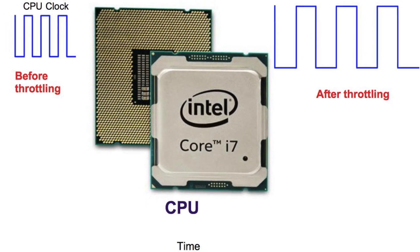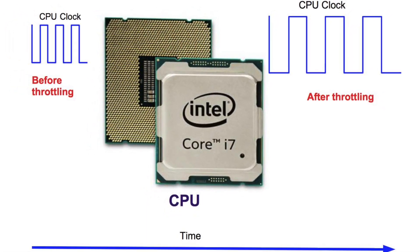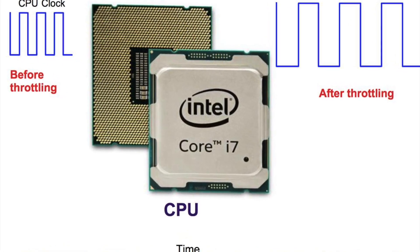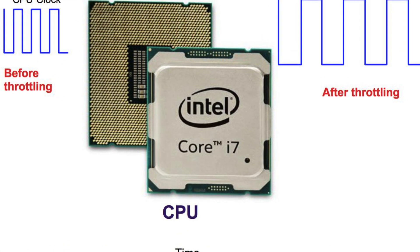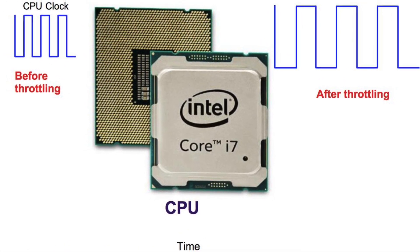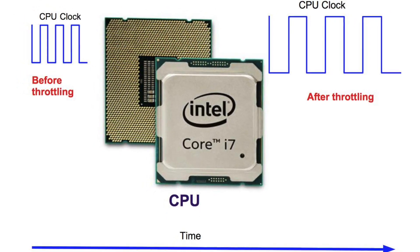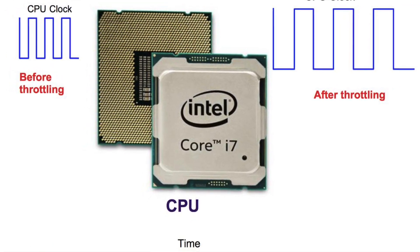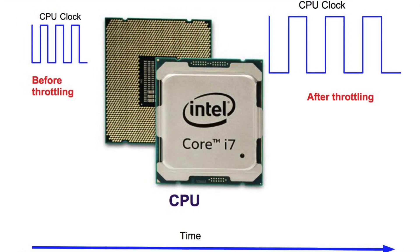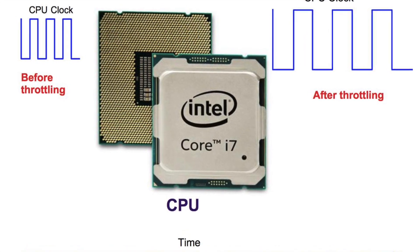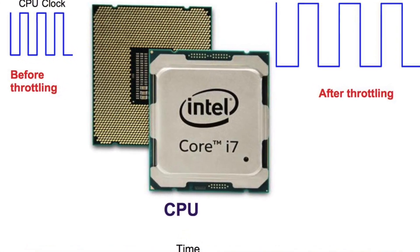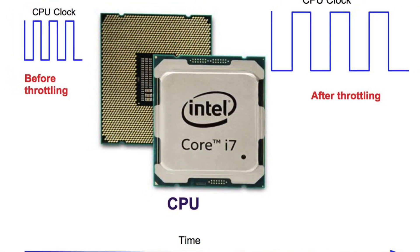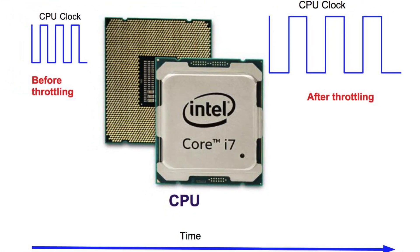When it senses that the CPU has cooled down enough and there is more room for additional heat production, it will ramp up the CPU back to the normal level. We should note that when it throttles, it will actually bring down the performance of the machine, because performance is directly related to the clock rate. The higher the clock rate, the more instructions a processor can execute.